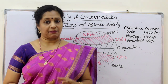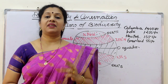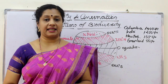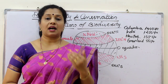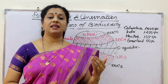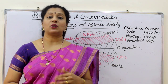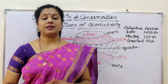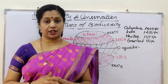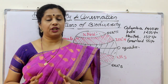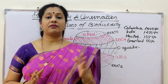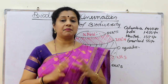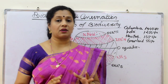Under Patterns of Biodiversity, we are discussing two headings. One, the latitudinal gradient — that means how the species diversity is changing with respect to the latitudes. At the same time, we are also discussing species-area relationship. Before we go into the pattern of diversity according to latitudinal gradient, let's understand the main latitudes on the globe.